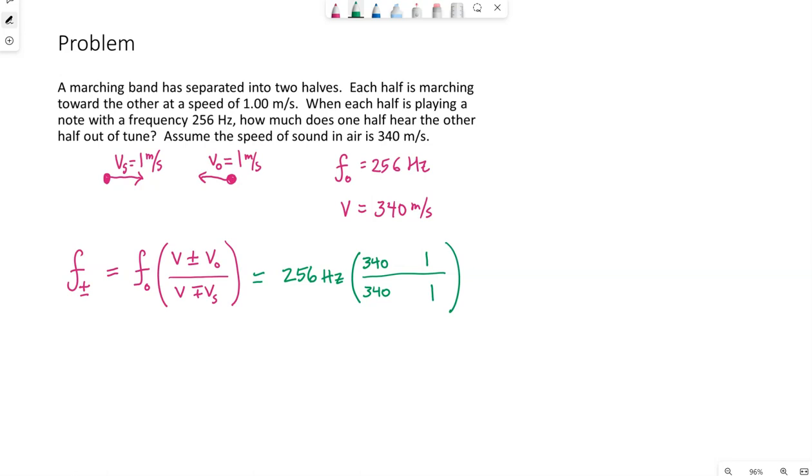Now, again, the signs. In both the numerator and denominator, the top of the two signs listed is for motion towards. The bottom is for motion away.